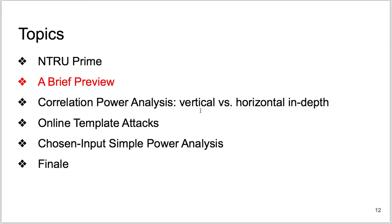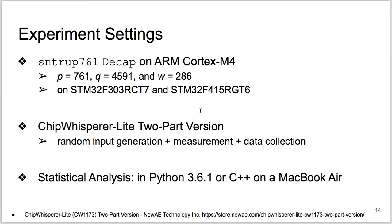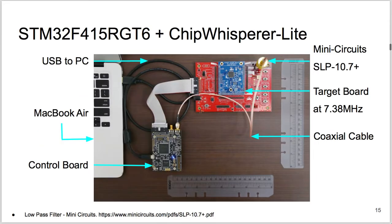A brief preview. We run our target implementations in C and ARM assembly on Cortex-M4. ChipWhisperer power version helps generate random inputs and measure the target's power consumption. Then we run the statistical analysis programs in Python 3.6 and C++ on Mac to analyze power traces. Here is the photo of all the measurement setup.